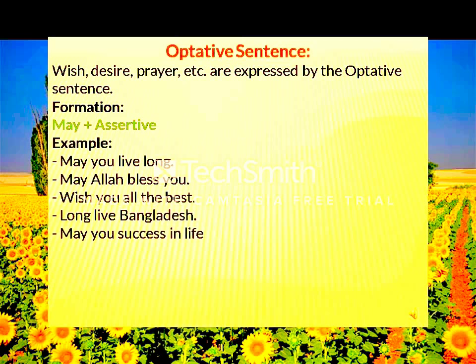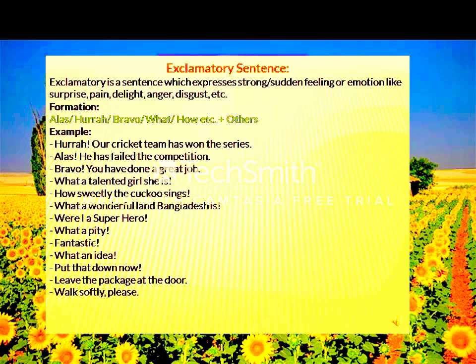To make an optative sentence, use: may + subject + verb. Another kind of optative sentence uses 'wish': 'Wish you all the best.' We can also say 'Long live our president' — this is also an optative sentence.